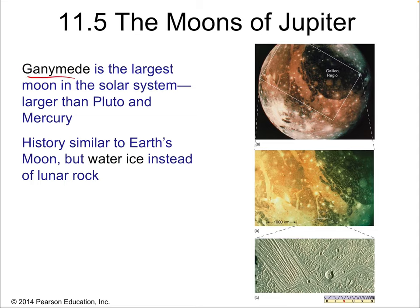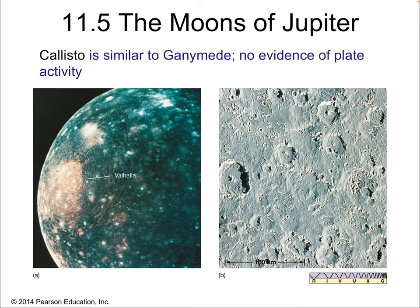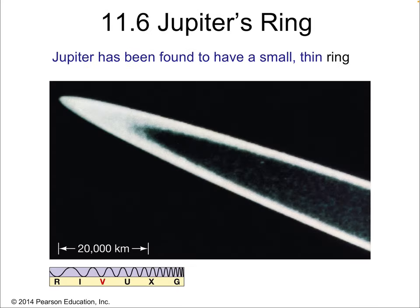Ganymede is the largest moon in the solar system — larger than Pluto and even larger than the planet Mercury — with an icy outer layer, a rocky layer, and an iron core. Its history is similar to Earth's moon but with water ice instead of lunar rock. Callisto is similar to Ganymede but has no iron core and no evidence of plate activity; it's further from Jupiter and not in the same orbital resonance, so it's a cooler world — essentially just an ice-rock mixture. Callisto has lots of craters because they don't get covered up, and its composition is similar to Pluto.